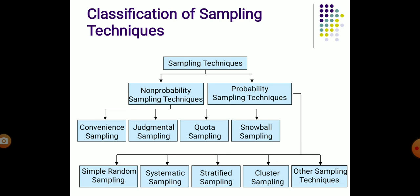There are two types of sampling techniques: non-probability sampling and probability sampling. In non-probability sampling, all elements of the population do not have an equal chance of selection. This method is known as non-probability sampling.